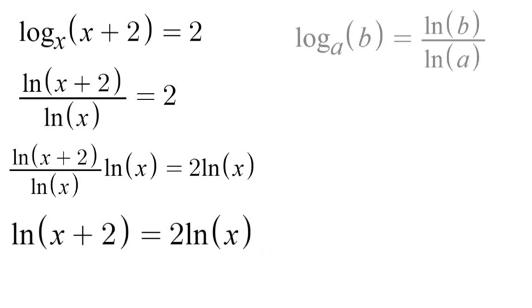So now what we want to do is apply logarithm properties and in terms of exponents 2 natural log of x is the same thing as natural log of x squared. When we have a function in our log we can move that exponent to the front which means we can also move it back. So we have natural log of x plus 2 is equal to natural log of x squared.